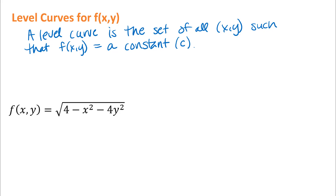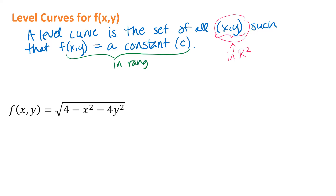A level curve is really just x, y. We will look at level surfaces for functions of three variables, but when we talk about level curves, we're really talking about functions of two variables, so we have x, y and we might choose to graph that in two dimensions in R2. The other important thing is that we're interested in when the outputs are a constant, so the c value needs to be in the range of the function. If I have a c value in the range, then what I'm looking at on my level curves is those x, y values in the domain that give us that specific output.